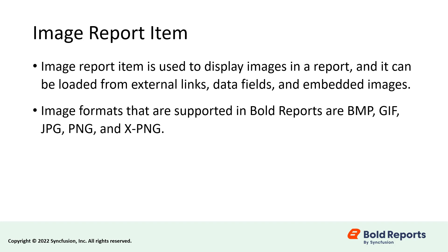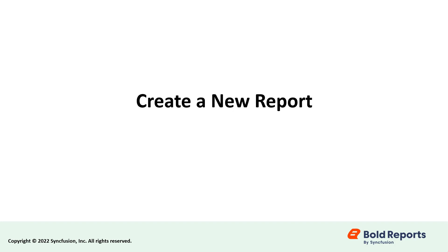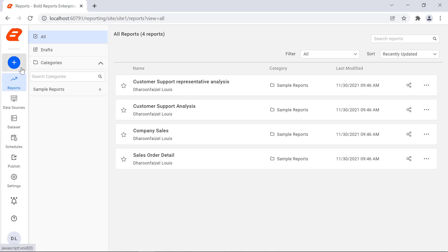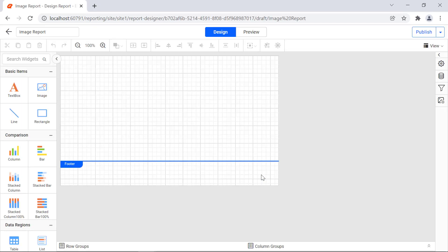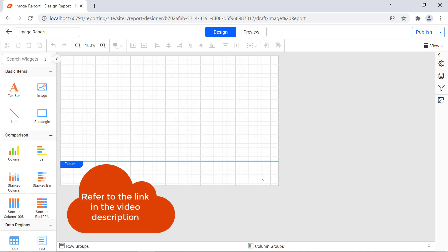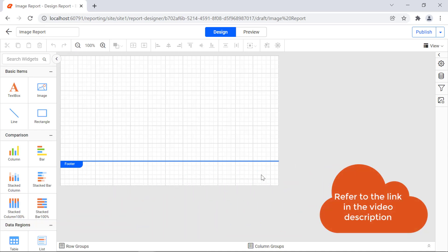Image formats that are supported in Bold Reports are BMP, GIF, JPG, PNG, and XPNG. In this video, you will learn how to add an image to a report. First, let's create a new report. Create a new report and name it image report. To learn how to create your first report, check the link provided in this video's description.